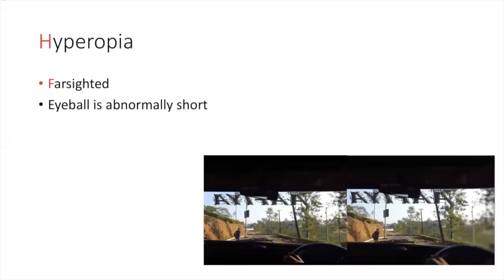The first type of refractive error is hyperopia. People with hyperopia can see from far but not near — they usually have impaired near vision. You can see this in a picture of a guy sitting in a car driving: his hand is blurry, but from far he could see everything really clearly. The eyeball is abnormally short as measured from front to back.